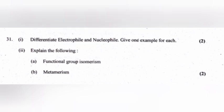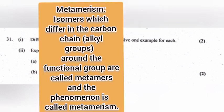Metamerism: Isomers which differ in the carbon chain around the functional group are called metamers and the phenomenon is called metamerism. It is commonly shown by ethers.